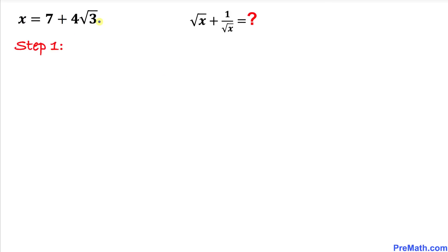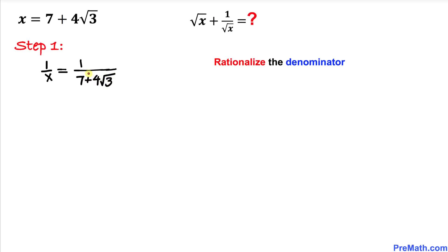Here's our very first step. We know that x equals 7 plus 4 times square root of 3. So therefore, 1 divided by x is the same as writing 1 divided by 7 plus 4 times square root of 3. Now let's rationalize this denominator by multiplying and dividing by its conjugate, which is 7 minus 4 times square root of 3, over 7 minus 4 times square root of 3.